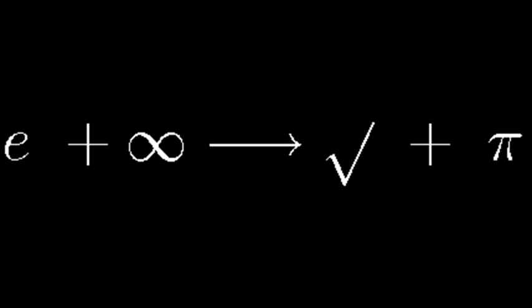We took a function with e, an irrational number, we evaluated it at infinity, a concept that's not a real number, and somehow we got the square root of pi, a completely different irrational number.